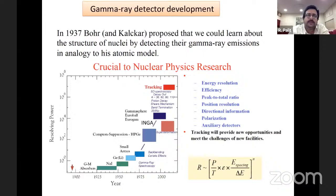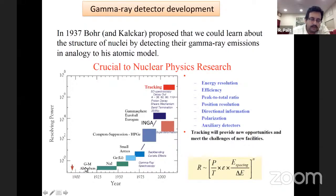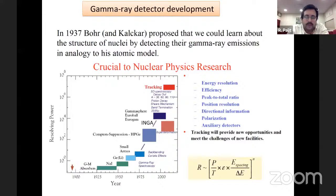Gamma rays are crucial for giving information about nuclear structure. This goes back to 1937 where Bohr and collaborators proposed we could learn about the structure of nuclei by detecting their gamma ray emissions, in analogy to the atomic model. Over the years the detectors have progressed from sodium iodide detectors to germanium-lithium detectors, small germanium-based detectors, and now large gamma tracking arrays. In between there were developments based on Compton-suppressed germanium detectors which reduced the Compton background.